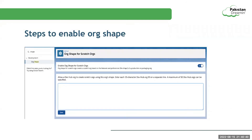Now we can check the steps to enable org shape. Enabling org shape is very easy: go to Setup, enter Org Shape, click Org Shape under the Development section, and enable the option 'Enable Org Shape for Scratch Orgs.' That's it — you are ready to use your org shape.